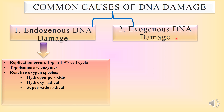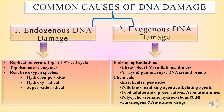The second kind of DNA damage is exogenous DNA damage. These damages are caused by ionizing radiations, including ultraviolet radiation which causes dimers to form between base pairs, and X-ray and gamma rays which cause DNA strand breaks. Apart from ionizing radiation, chemicals also cause exogenous DNA damage — these include insecticides, pesticides, pollutants, oxidizing agents, alkalizing agents, food adulterants, preservatives, aromatic amines, polycyclic aromatic hydrocarbons, carcinogens, and even anti-cancer drugs.